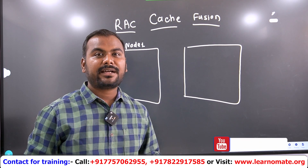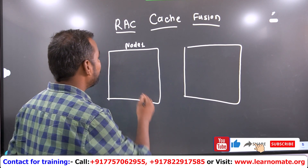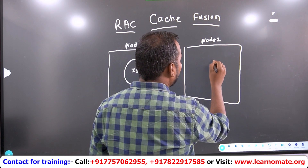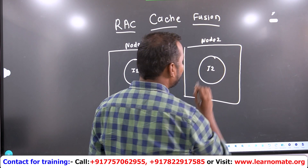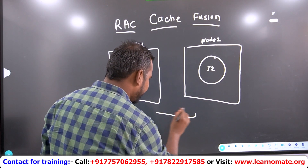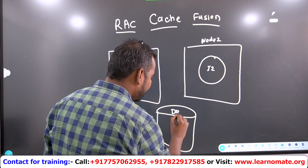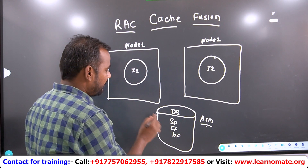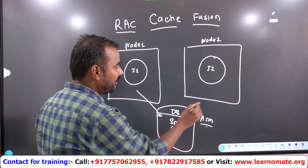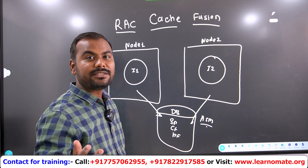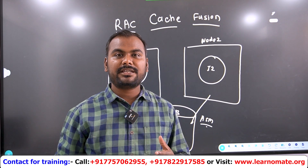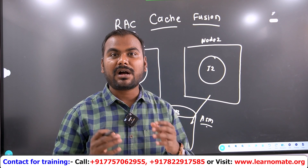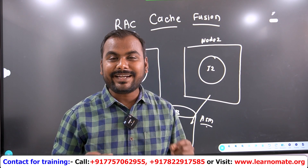In order to make you understand, I am considering a two-node RAC setup. This is Node 1 where Instance 1 is running, and this is Node 2 where Instance 2 is running. This is where my database is stored, containing my SPFile, control files, and data files — available under ASM storage. This database is shared between Node 1 and Node 2. The role of cache fusion is to transfer data from one node to another so that you don't need to read the data from disk.